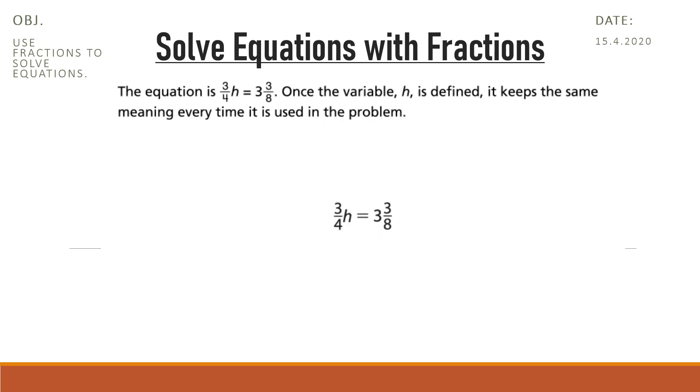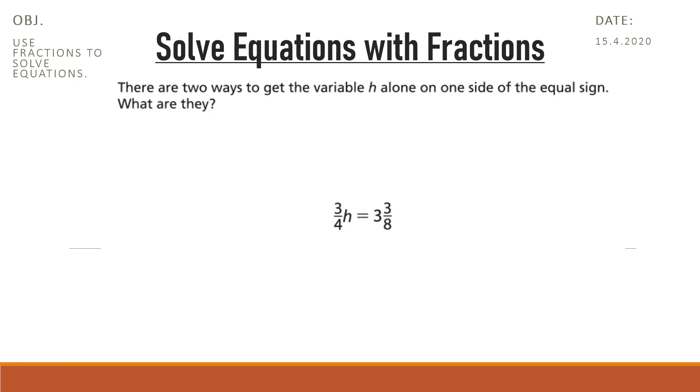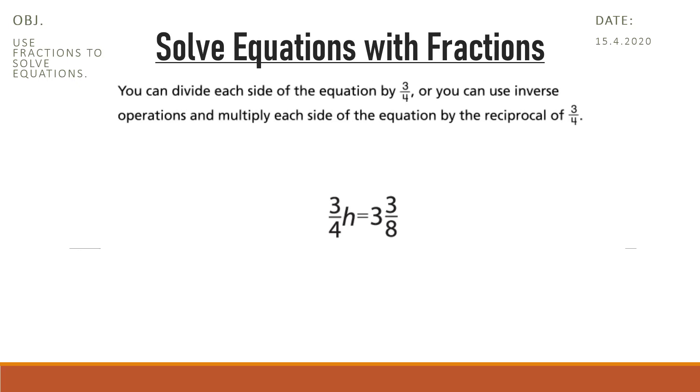Once the variable h is defined, it keeps the same meaning every time it is used in the problem. There are two ways to get the variable h alone on one side of the equal sign. What are they? You can divide each side of the equation by 3/4, or you can use inverse operations and multiply each side of the equation by the reciprocal of 3/4.